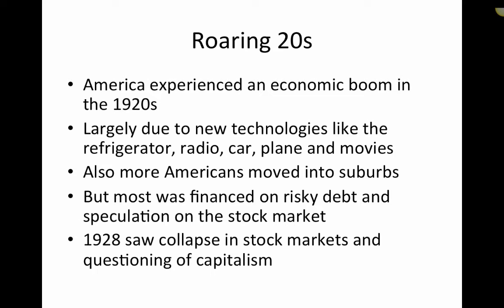Because of that risky speculation, in 1928 there was a collapse of the stock markets, leading to strong questioning of capitalism. When the Great Depression took place, most people blamed the United States for what had happened, and started saying maybe there's something wrong with democracy, maybe something wrong with capitalism. They started looking to the two alternatives available at the time: Nazism and fascism, or communism.